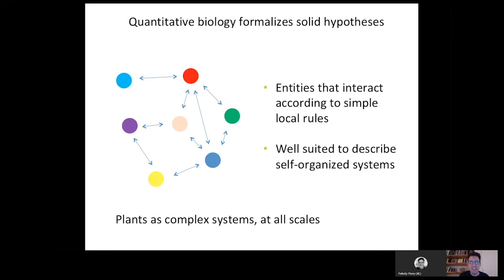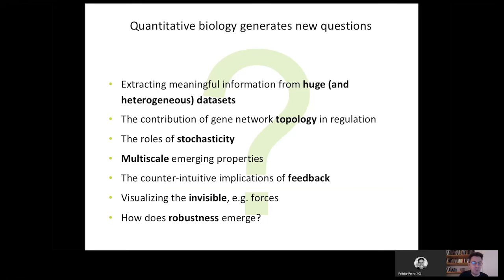When you look at the plant, you can look at individual elements, but actually the most important focus is on the interactions between the elements. In complex systems, we want to look at the rules governing interactions between elements. With this, we can explain self-organization, which is really key to plant development and plant biology at any scale. These are the sub-questions we can address with this quantitative approach.